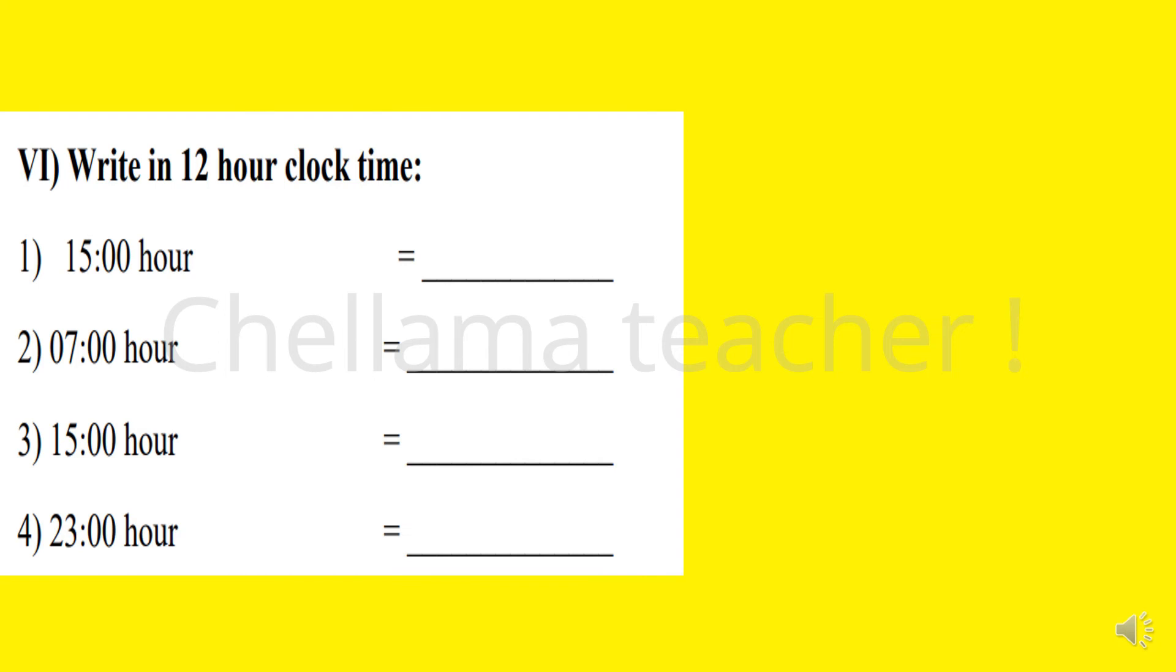Next, writing 12 hour clock time. Question 1: 15 hour means one complete midnight 12 to noon 12, that's 12 hours plus 3 hours. So we subtract 12 hours from 15 hours: 15 minus 12 equals 3. As it crosses 12 noon, we have to say PM. So the time is 3 PM.